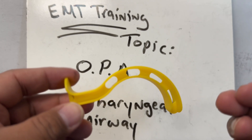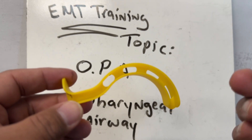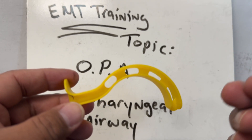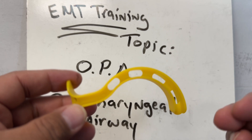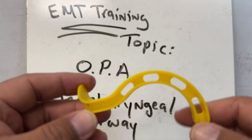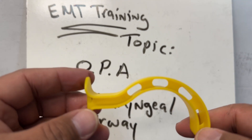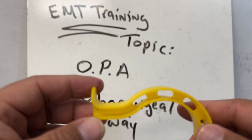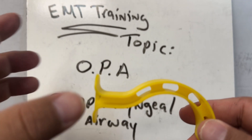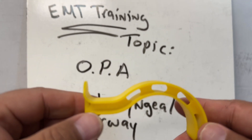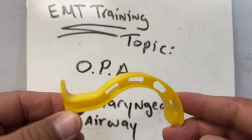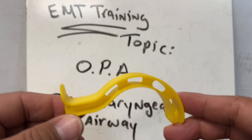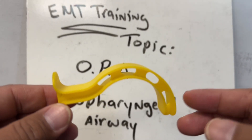The whole purpose of this device is as an adjunct to open an airway. You still need to use the head tilt chin lift or a jaw thrust first, and then add these tools. One of those tools is the OPA, or oral pharyngeal airway.